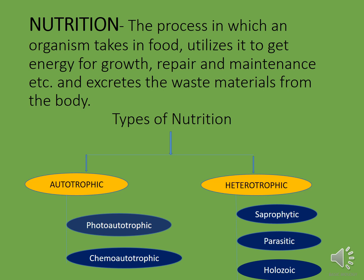The types of nutrition are of two types: autotrophic nutrition and heterotrophic nutrition. Auto means self. The organisms which make their own food are known as autotrophs. Heterotrophic nutrition is the nutrition in which organisms are dependent on other organisms for their food. In autotrophic nutrition there are two types: one is photo-autotrophic, in which organisms use solar energy to make their food, and chemo-autotrophic nutrition, in which organisms use chemical energy to make their food. We will study these in detail in the next slides.